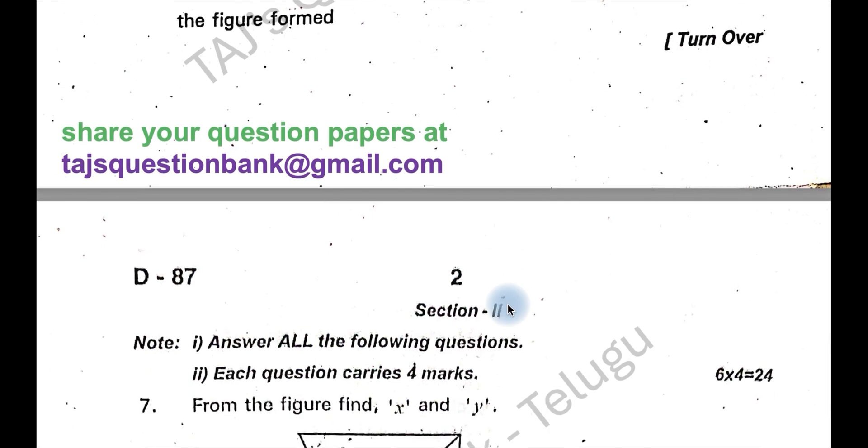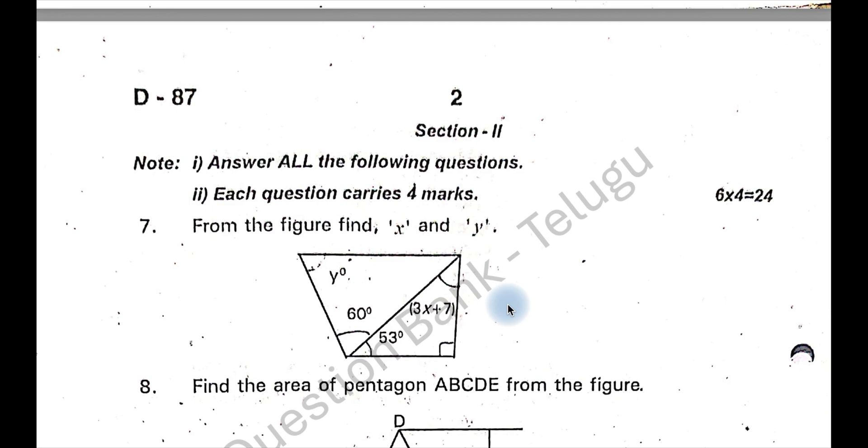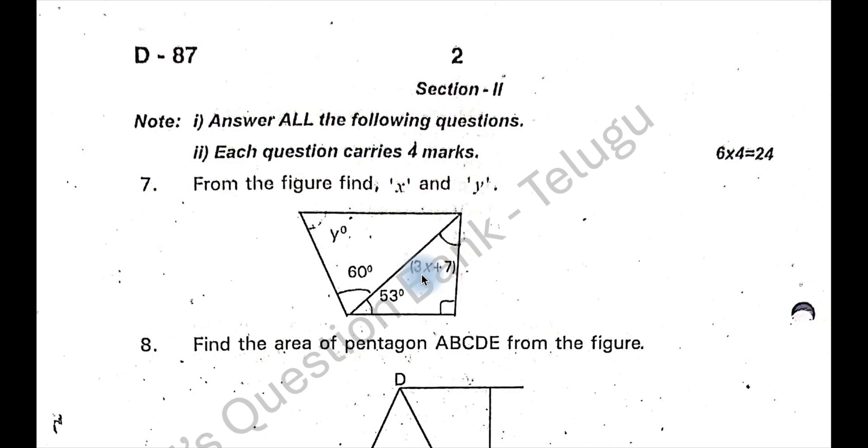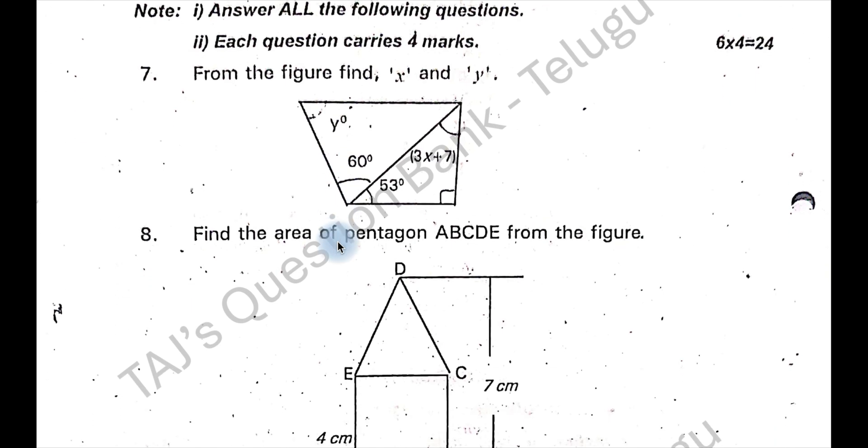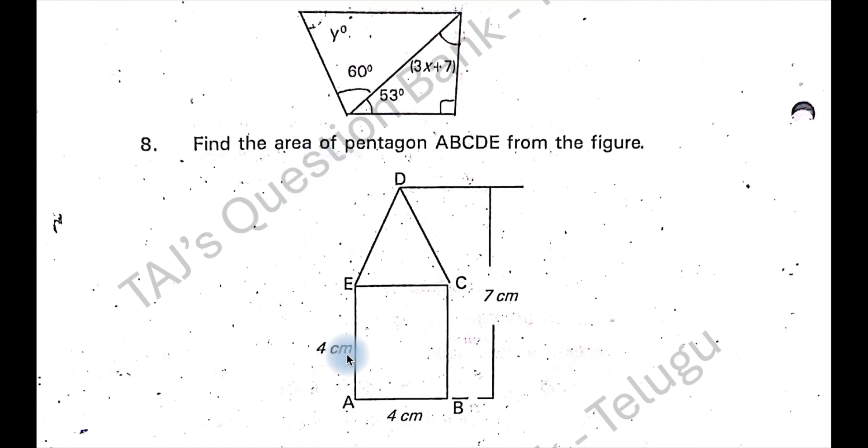Coming to question number seven, solve this triangle. First here you will get x is equal to 10 degrees. How? 3x plus 7 and 53 will be equal to 90 degrees because this is a right angle triangle. When you get x is equal to 10 degrees, 3x plus 7 will be 37 degrees and this one becomes again a right angle here. So the balance angle will be 53 degrees. When you take this triangle, y will be equal to 67 degrees.